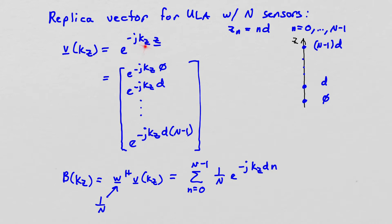So it's e to the minus j kz times z, a vector z, where z simply is the sensor locations. So if we compute that, we get for our first sensor or zeroth sensor, e to the minus j kz times 0 in the first slot, then e to the minus j kz times d in the second, on down to e to the minus j kz d times n minus 1. So that's our narrowband replica vector.